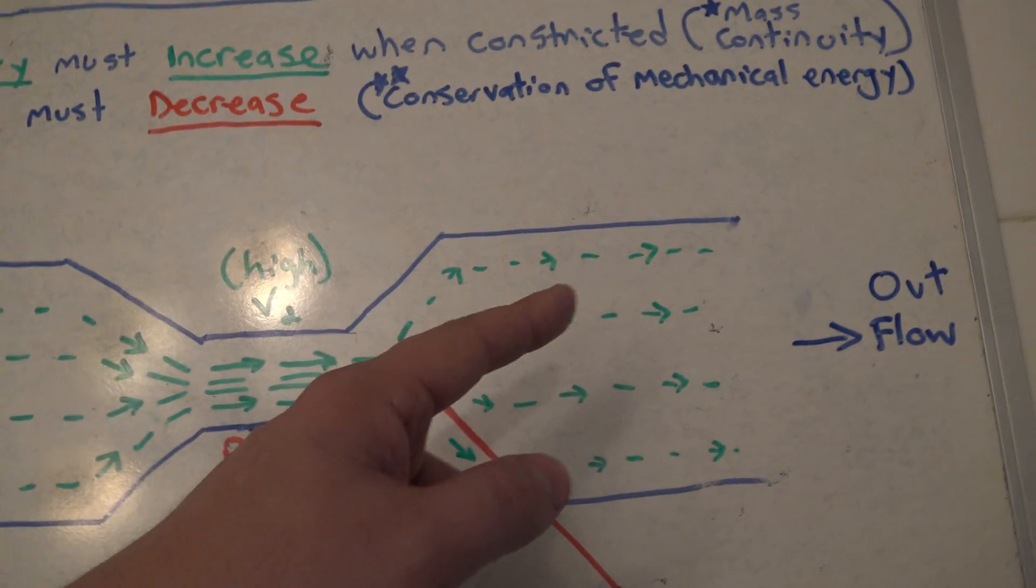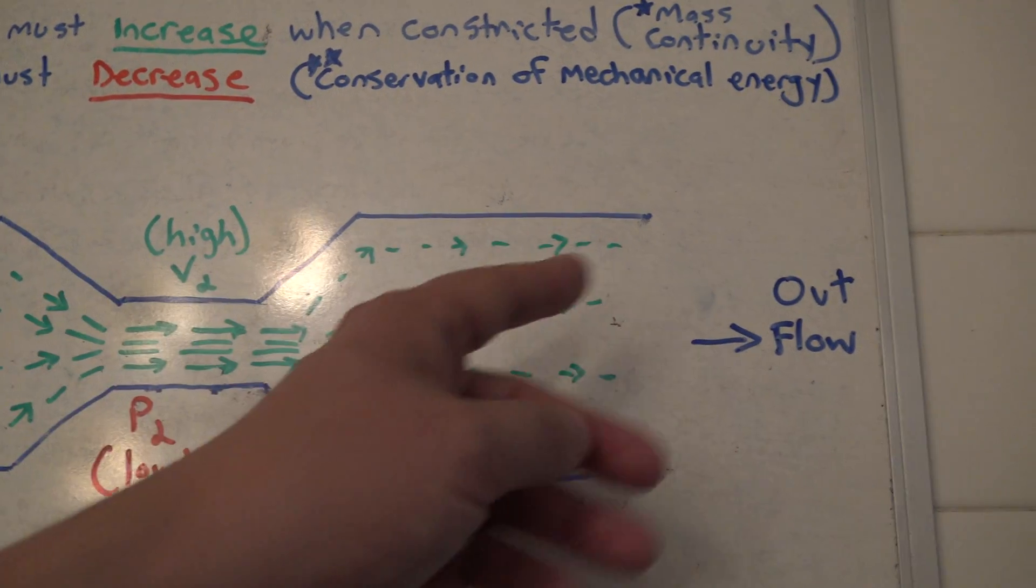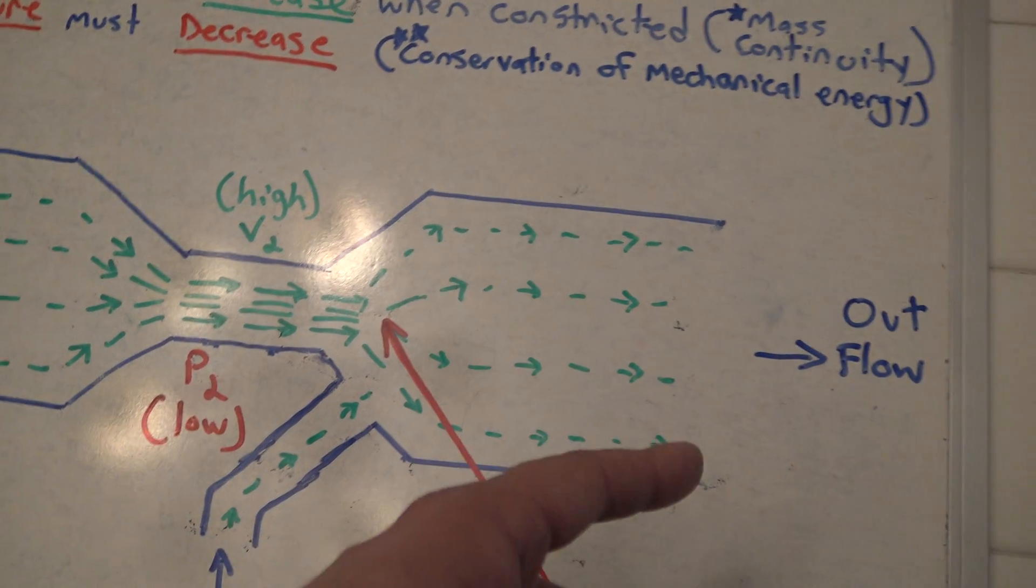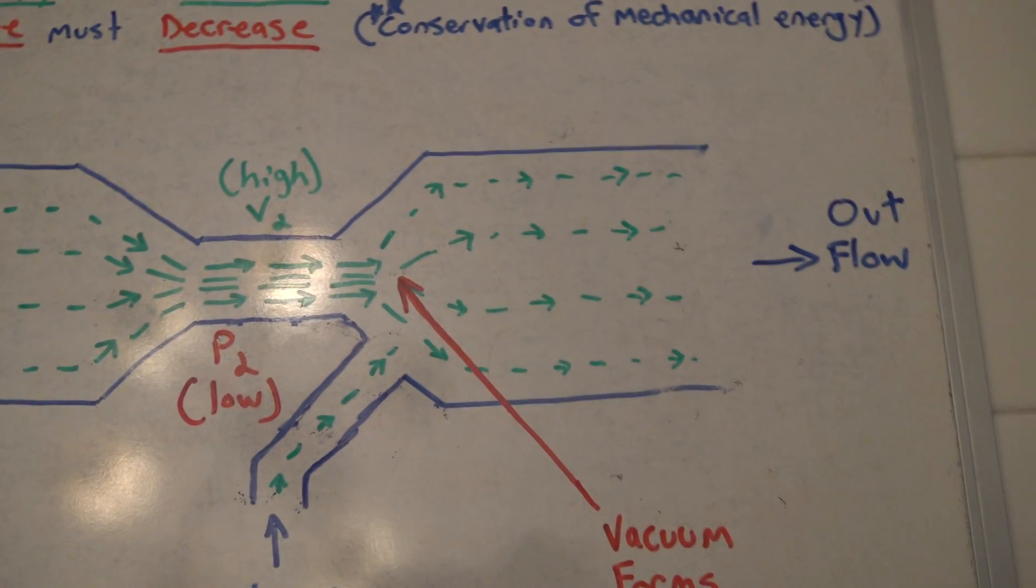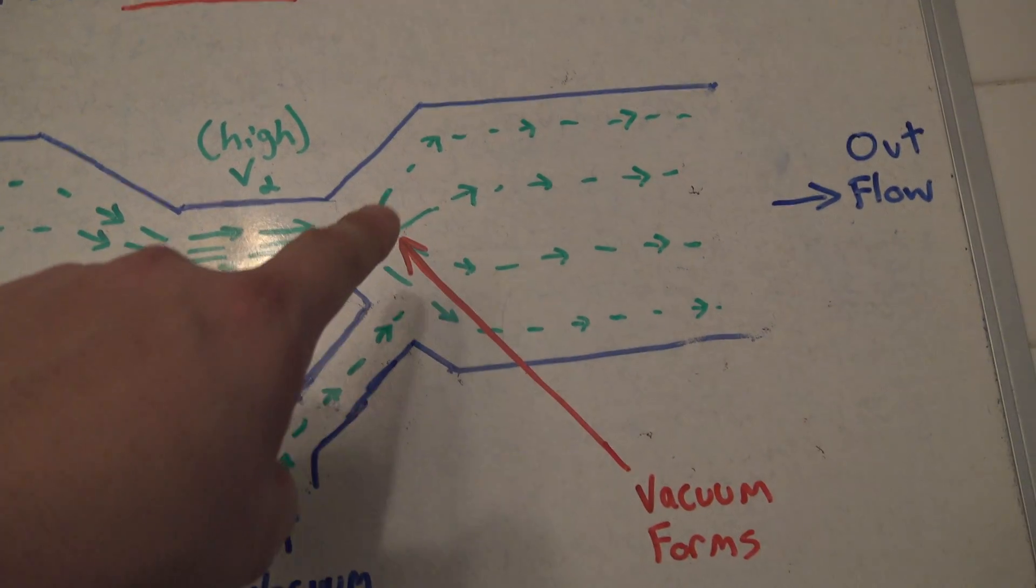And then what happens is, as it exits the other side, the velocity decreases once again because it has a larger area to fill, and the pressure increases once again as well. And this is where the magic happens.